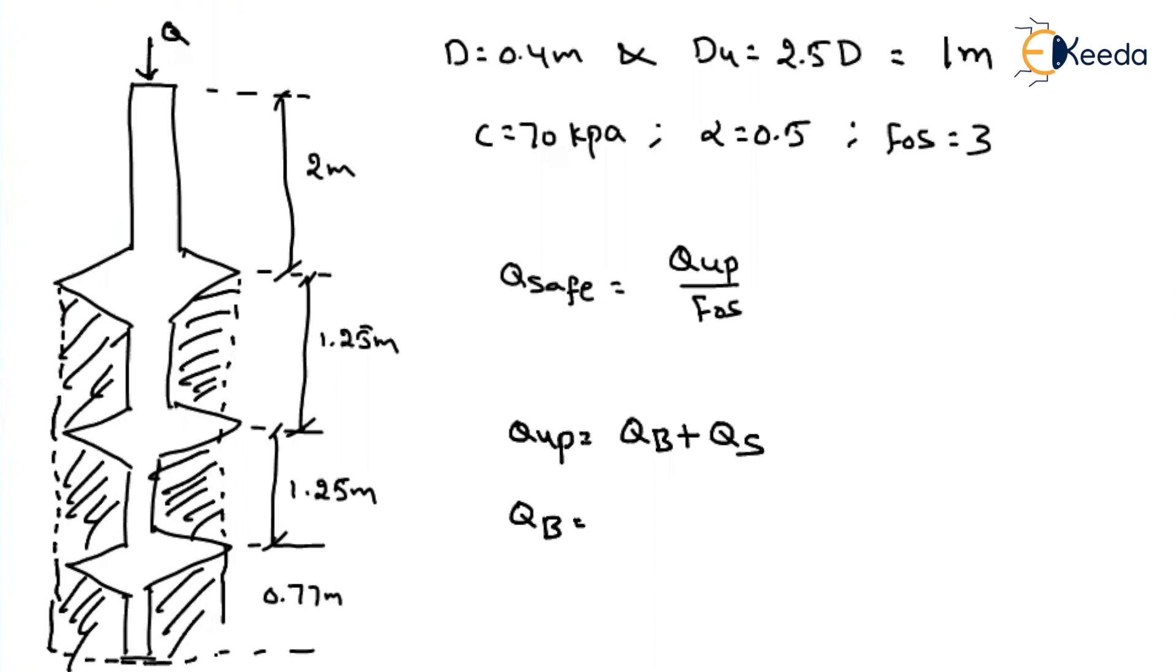So what about the end bearing resistance? That will be equal to unit end bearing resistance into area of the end bearing. What about here? C times N_c. What about the C value? 70. What about the N_c value? 9. What about the area of end bearing? This much. That will be nothing but Pi by 4 into whatever the enlarged area, 1 whole square. This is what about the end bearing resistance.